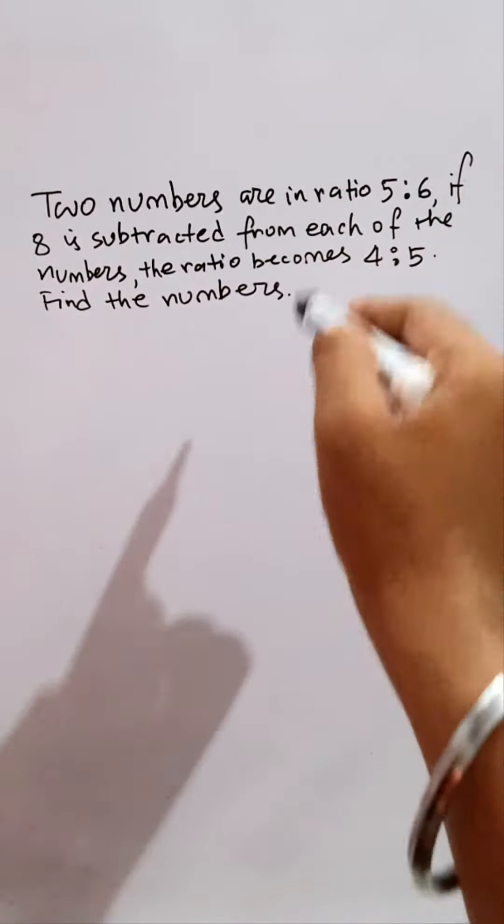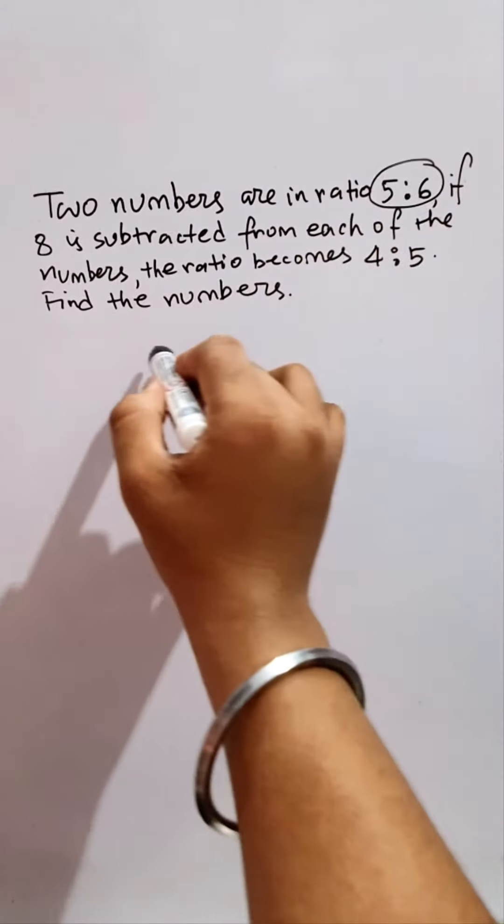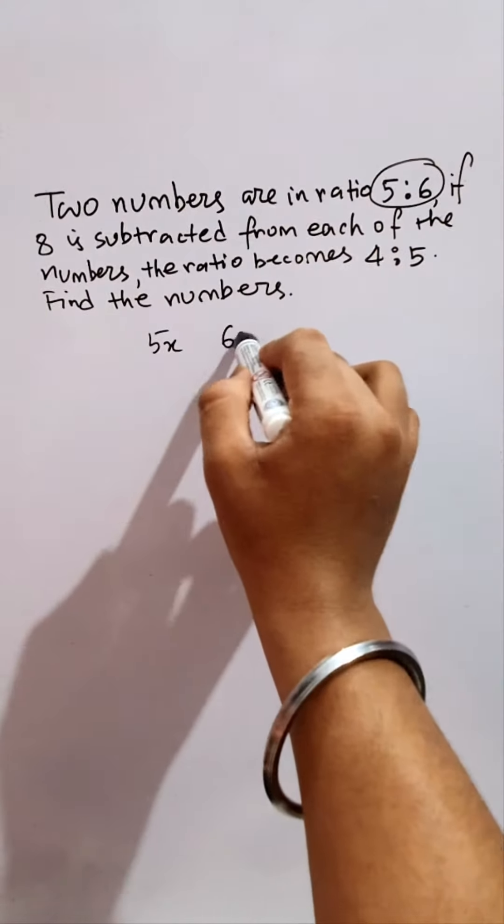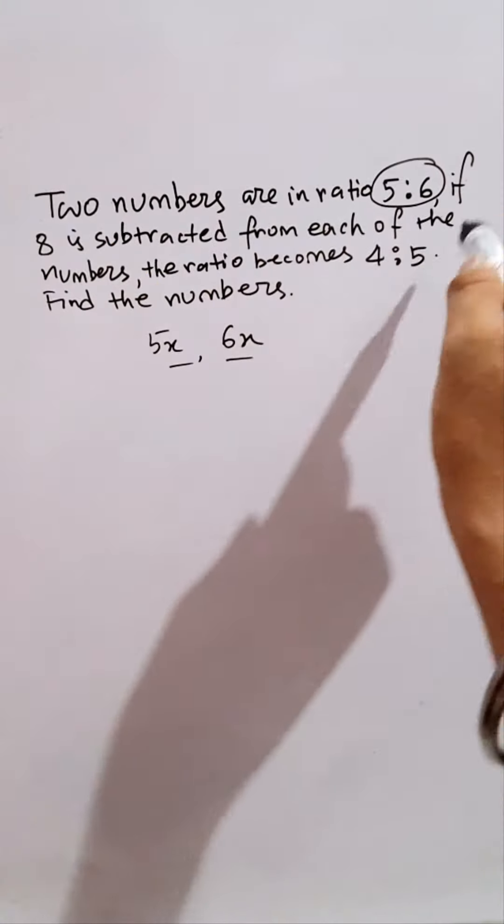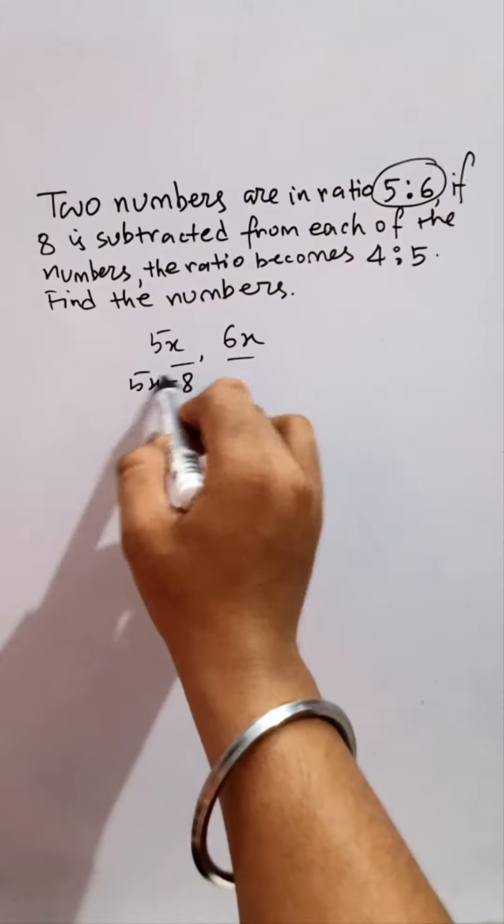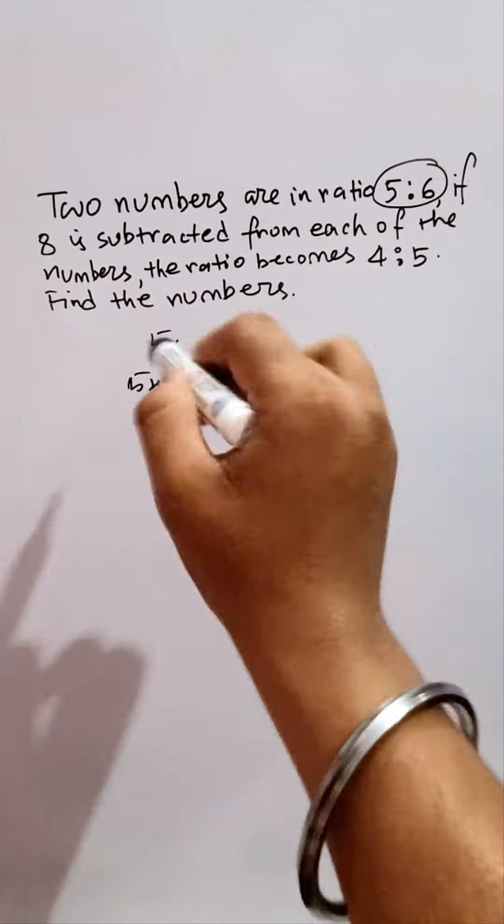From the given question, first of all let's learn the trick to find the two numbers. Assume them as 5x and 6x, these two numbers. If 8 is subtracted from each of them, now the new pair will be 5x minus 8 and 6x minus 8. These are the two new numbers after being subtracted 8.